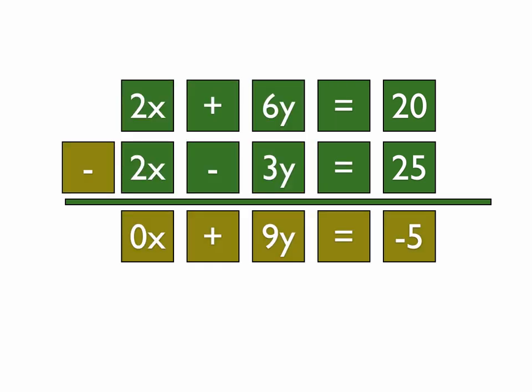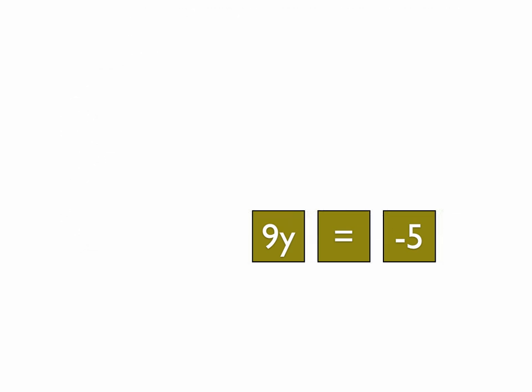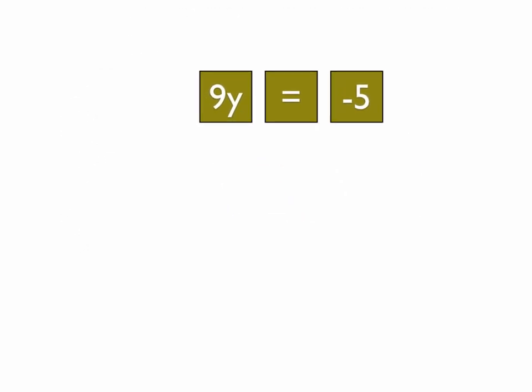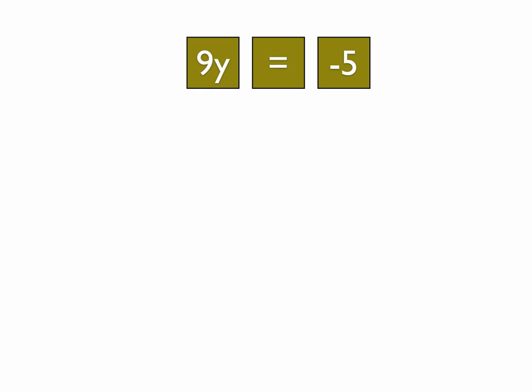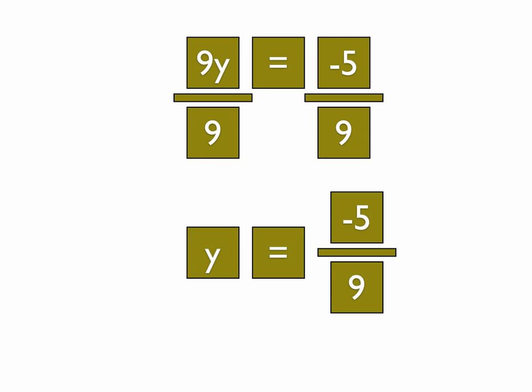And the final answer is 0x plus 9y equals negative 5. Again, anything times 0 is 0, so we can get rid of the x's. That's no longer part of our problem. We have positive 9y equals negative 5. That's what's left, because we've eliminated everything else. And we divide both sides by 9, and y equals negative 5 ninths.